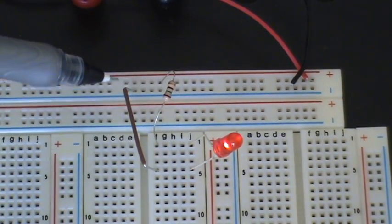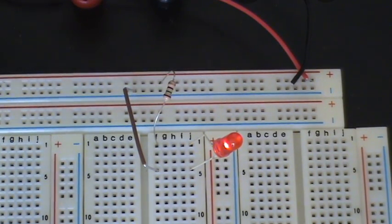And it hops through the jumper wire, goes back to the negative, and completes the circuit.